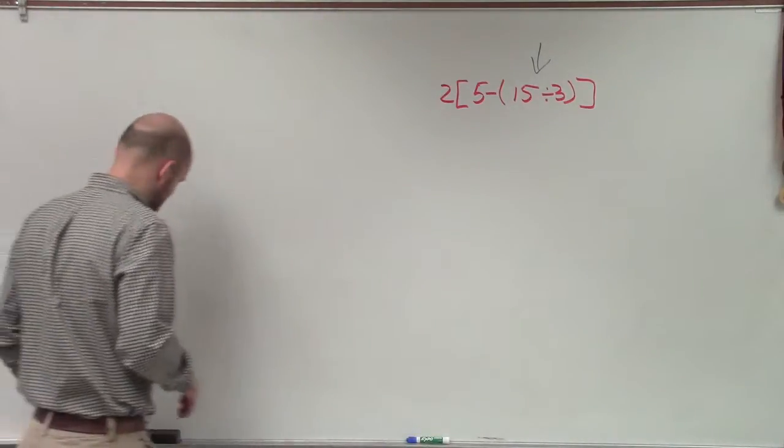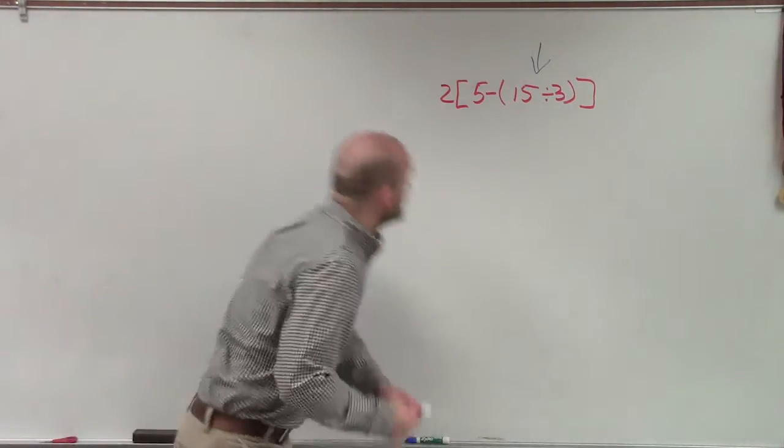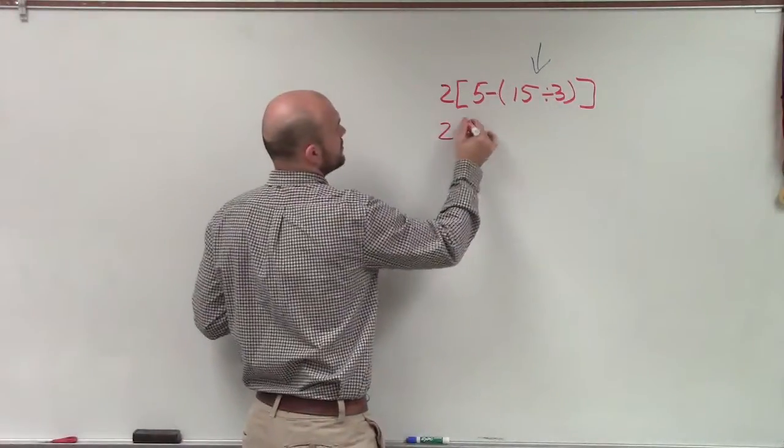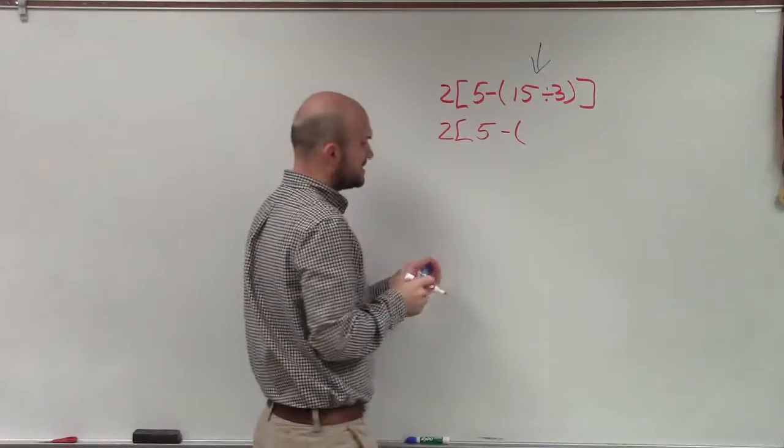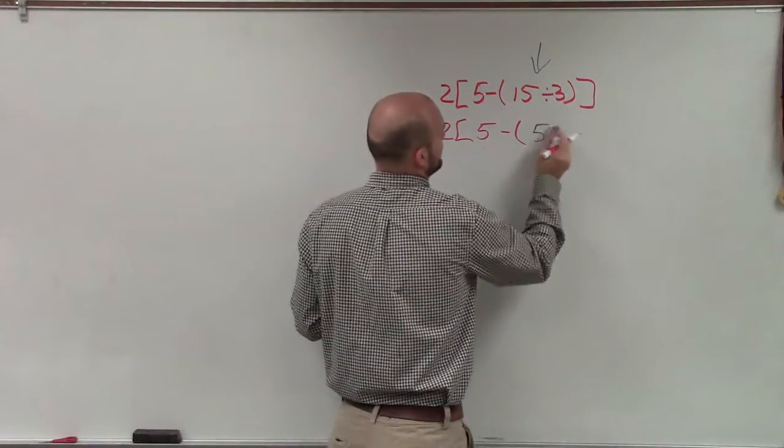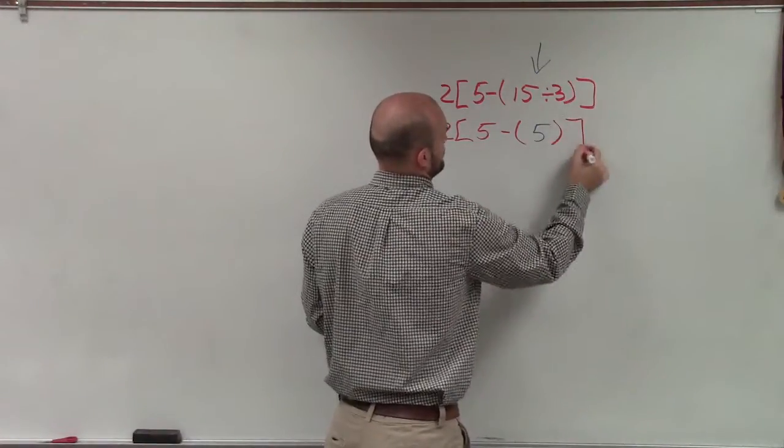Where did I put my red marker? I guess I'll just throw that. So I'll do 2 times 5 minus, in parentheses I can still do, 5.